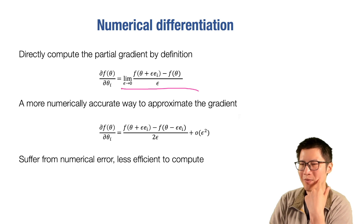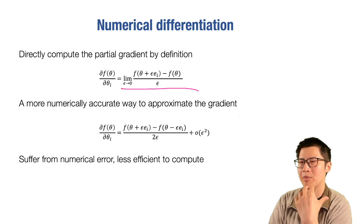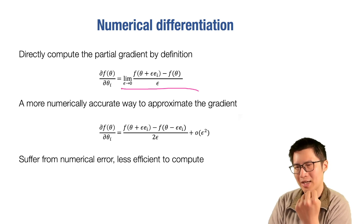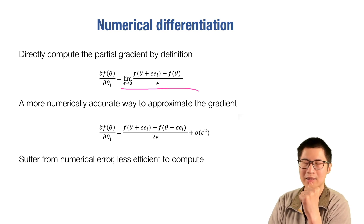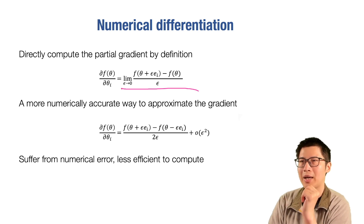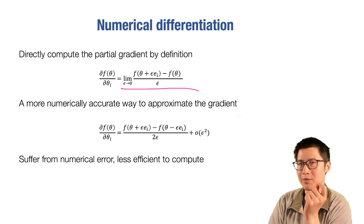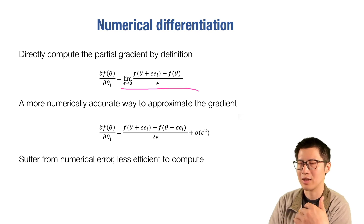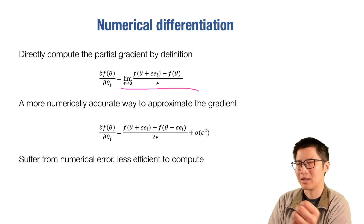This formula is operational: we can pick a theta_i, pick e_i and epsilon, compute f(theta + epsilon*e_i) minus f(theta), and divide by epsilon. If you pick a small enough epsilon, that approximately gives you the gradient. This is called numerical differentiation — we're computing it numerically from the definition. In practice, there's a more accurate formula: instead of f(theta + epsilon*e_i) minus f(theta), we use f(theta + epsilon*e_i) minus f(theta - epsilon*e_i), which gives a more accurate estimation.